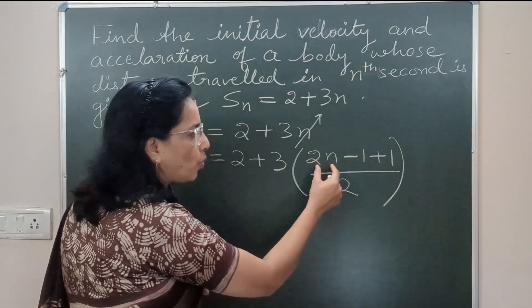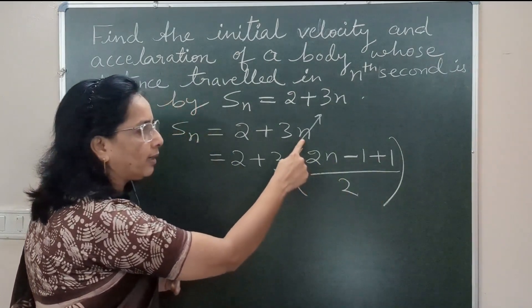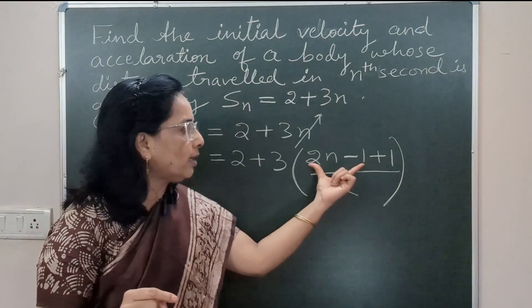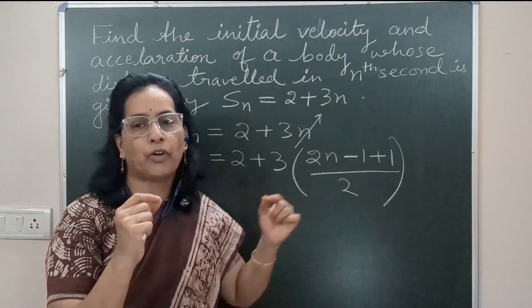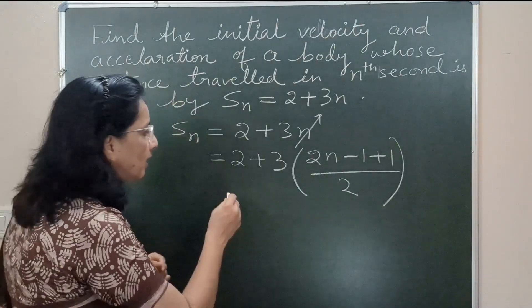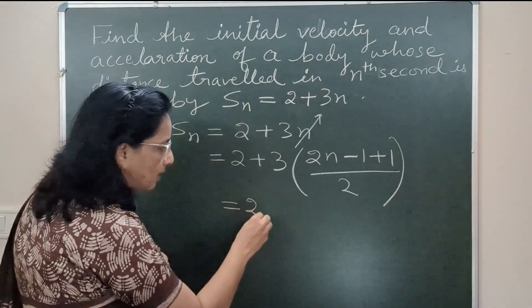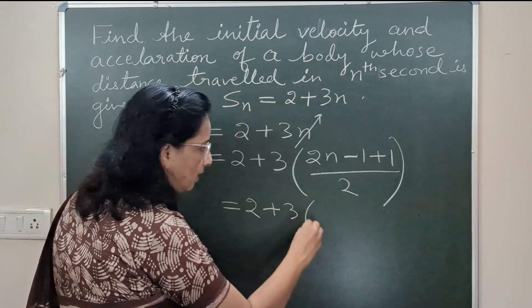That appears in the expression for distance traveling nth second. Now here we can write this as 2 + 3 times... let's go for individual separation. So this is (2n - 1)/2 + 1/2.